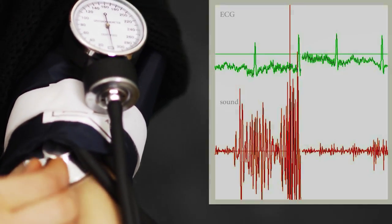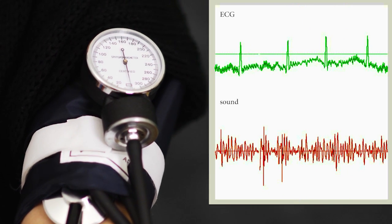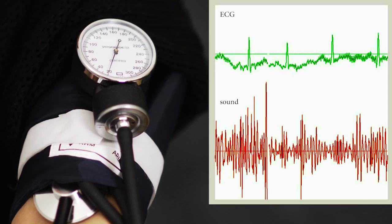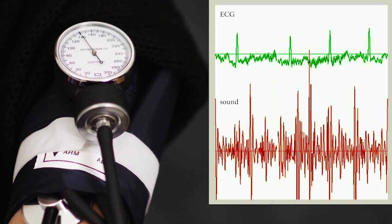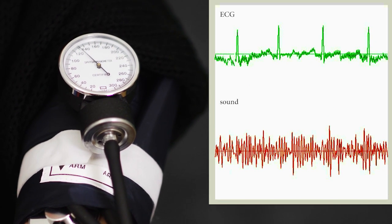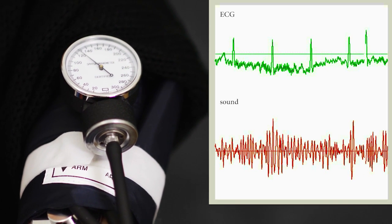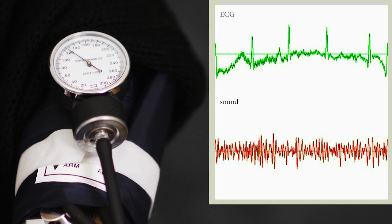Another use for the stethoscope is to listen to our blood flowing, very much like when measuring blood pressure in the traditional way. The way to do this is to place the stethoscope over the brachial artery and then increase the pressure to a high value in order to stop the blood flowing. We then start releasing the pressure very slowly, and as soon as we hear sound, that marks the beginning of the systolic blood pressure, and its value can be read from the manometer.